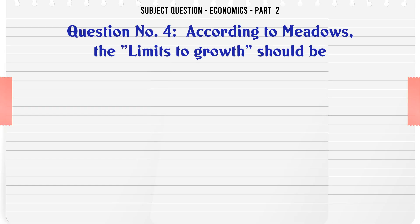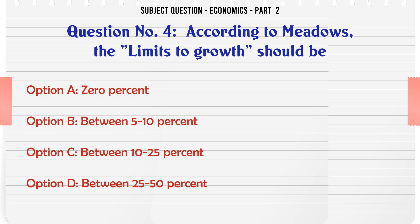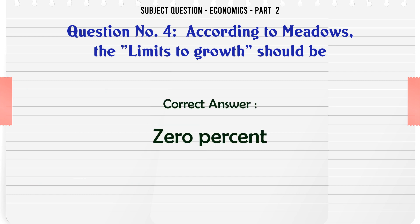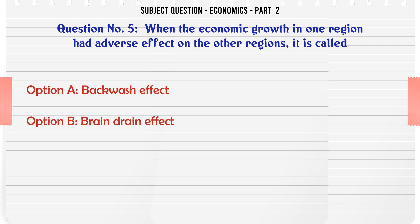According to Meadows, the limits to growth should be: A. 0%. B. Between 5 to 10%. C. Between 10 to 25%. D. Between 25 to 50%. The correct answer is: 0%.